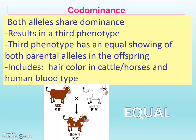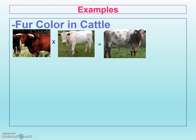The examples we're going to look at — we're going to practice with hair color in cattle. We could also have done horses, but we're using cows. We're going to look a little bit at human blood type, but I'm going to run you through a practice here with chicken feather color. So with fur color in cattle, this is a pretty common example of co-dominance.